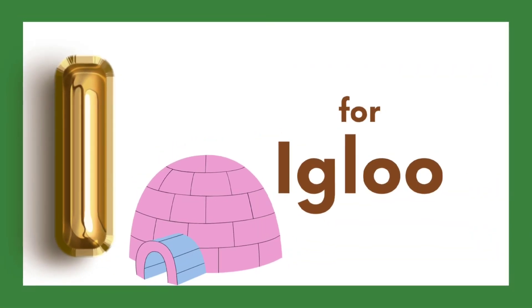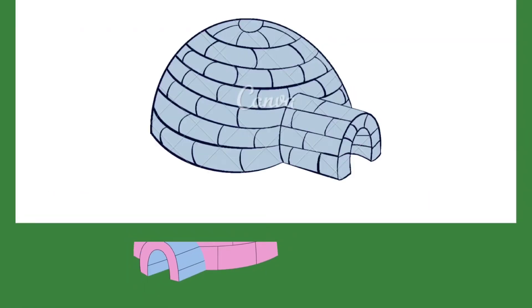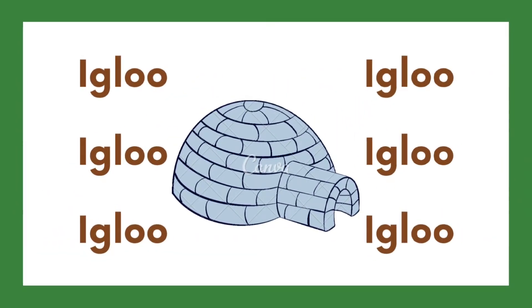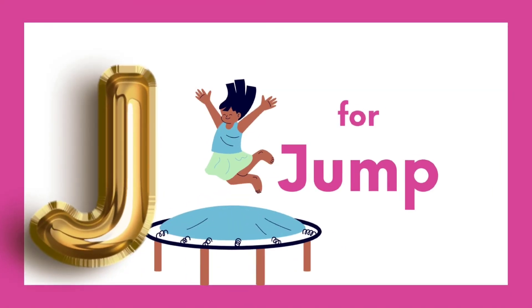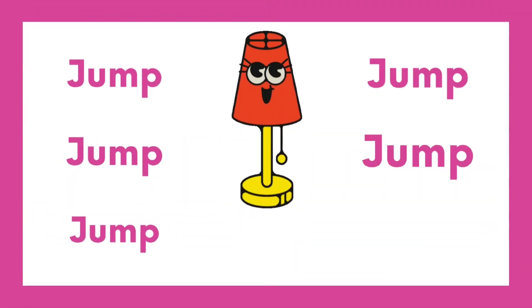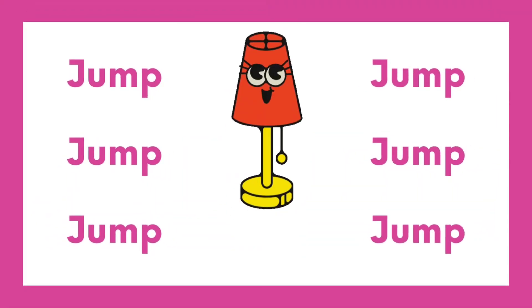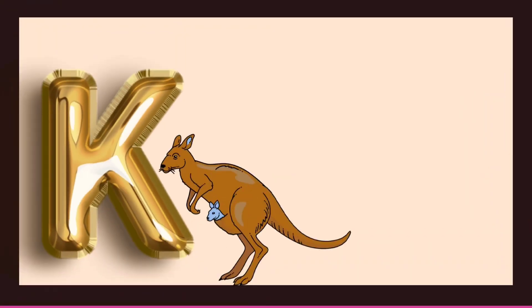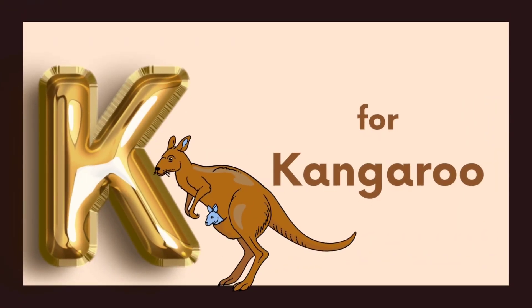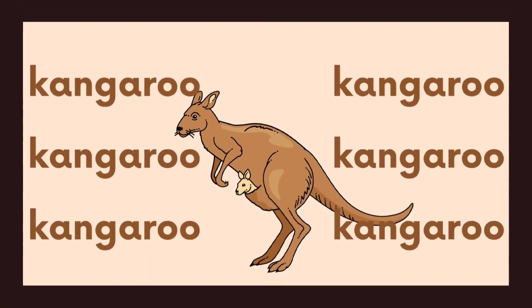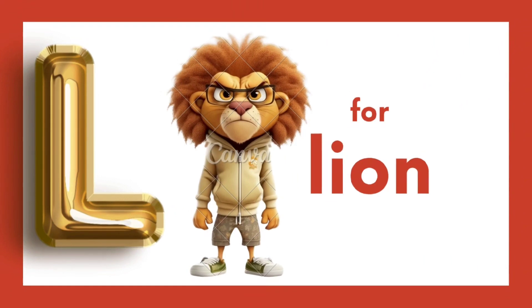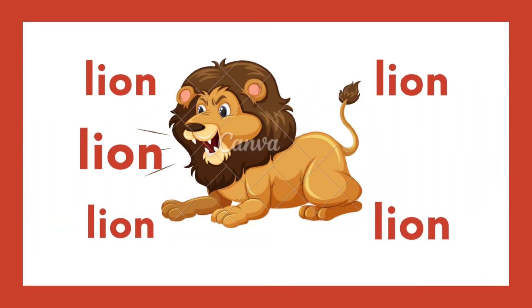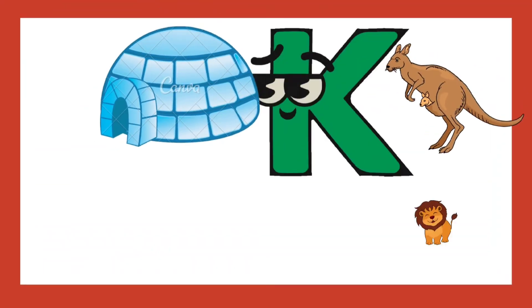I is for Igloo, I-I-Igloo. J is for Jump, J-J-Jump. K is for Kangaroo, K-K-Kangaroo. L is for Lion, L-L-Lion.